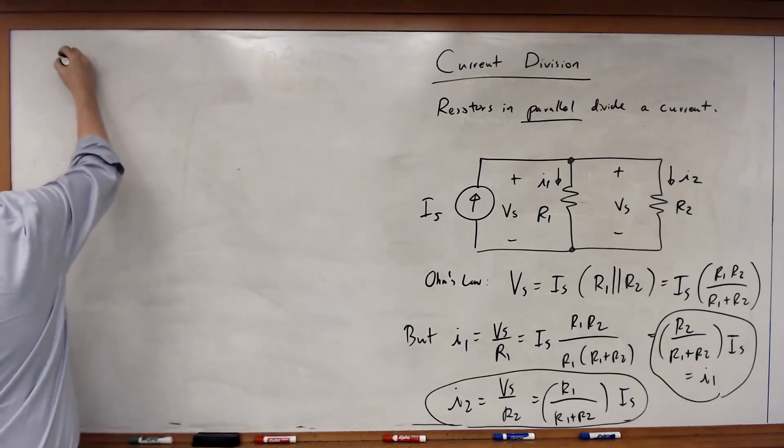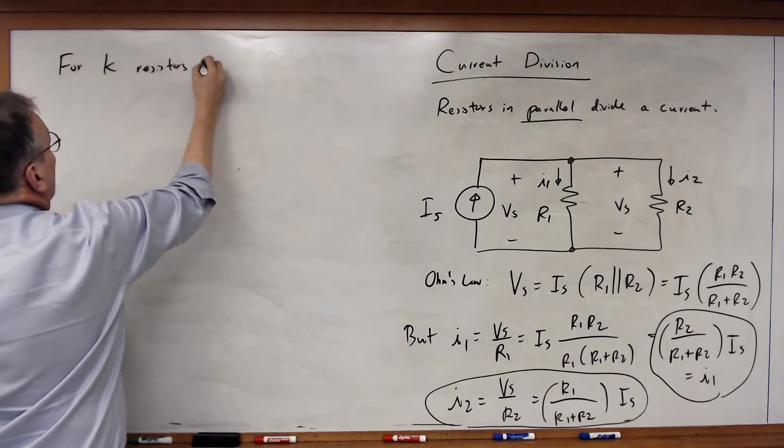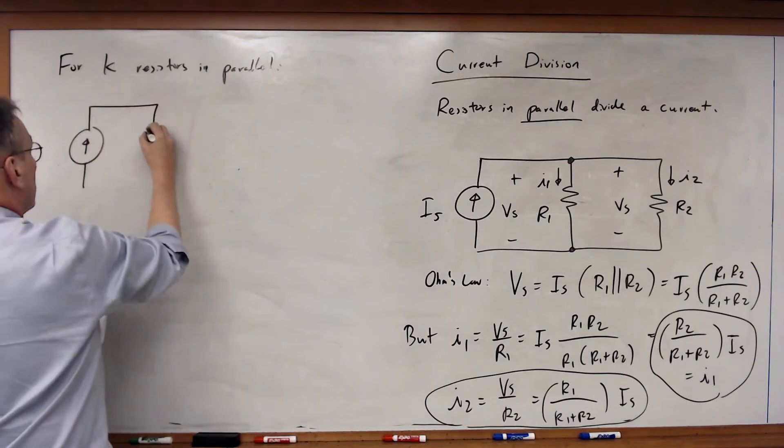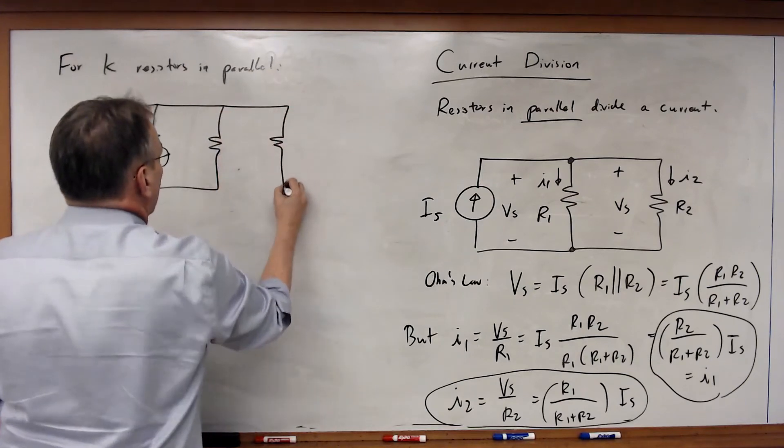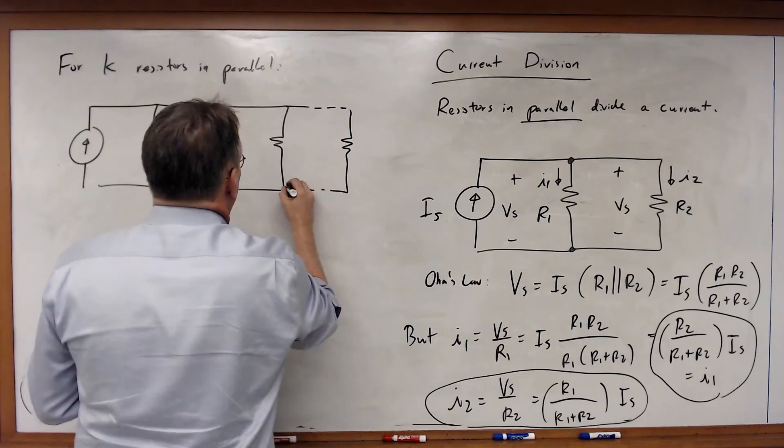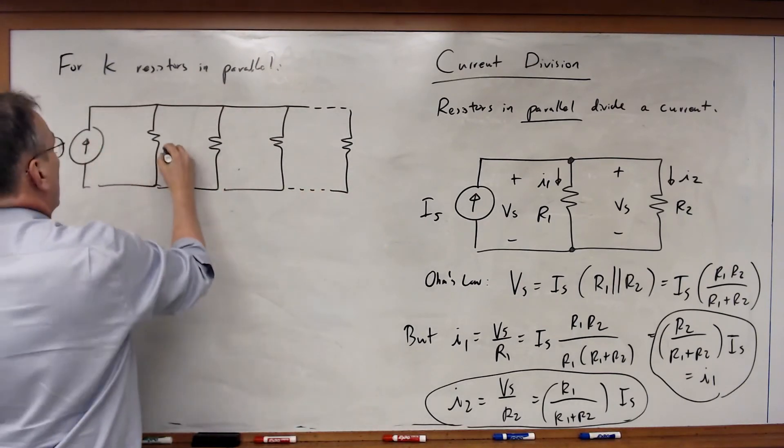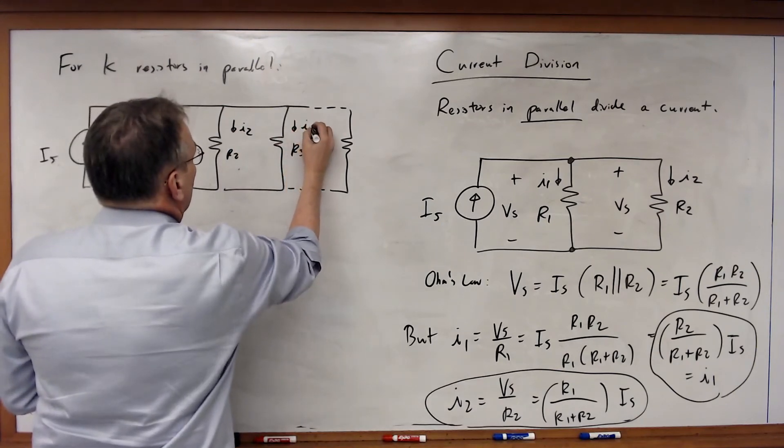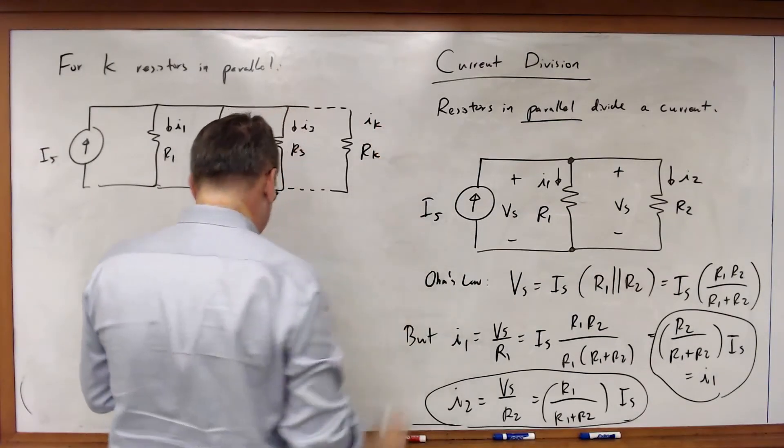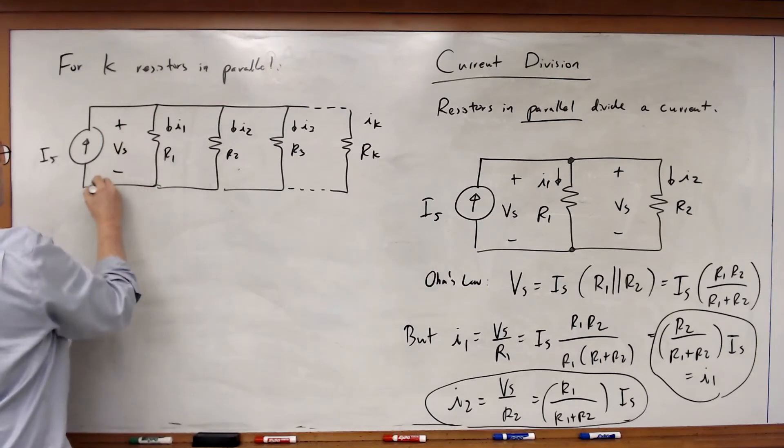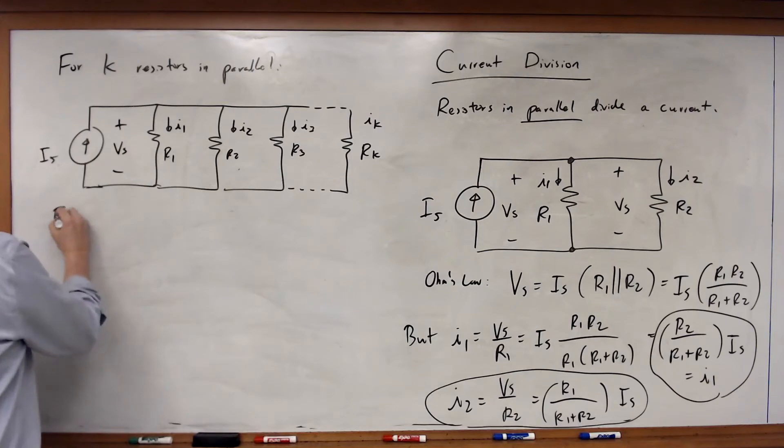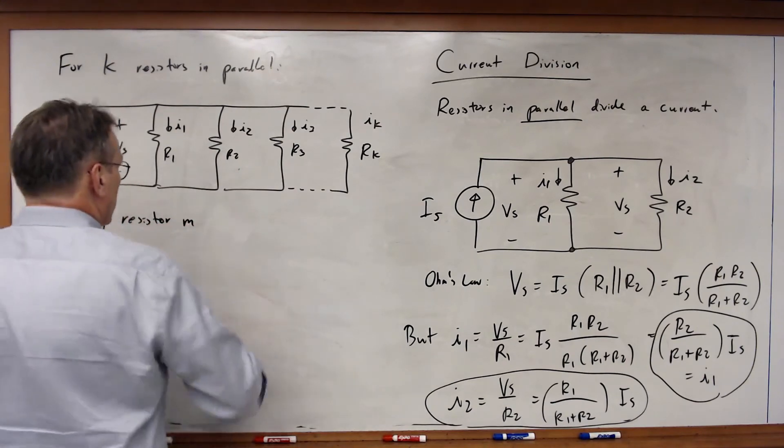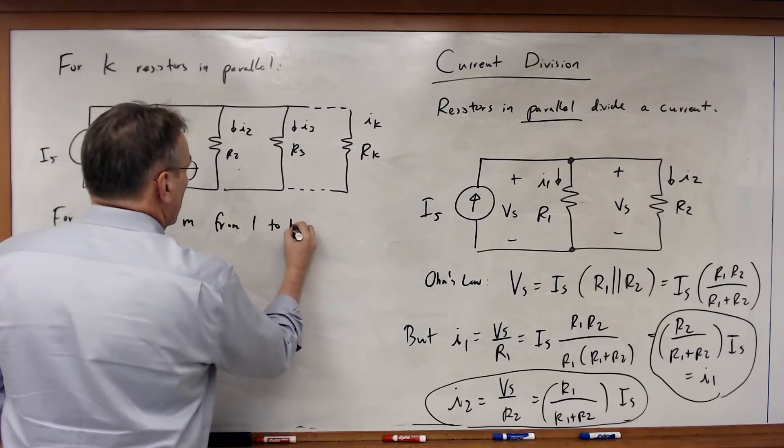Let's say I've got this circuit where I've got an arbitrary number of resistors in parallel, any number I want. In this case, I've got R1 with I1, R2 with I2, R3 with I3, all the way to RK and I sub K. I've got the same voltage VS across all of those resistors. And I can show for any resistor M from 1 to K the following equation holds.